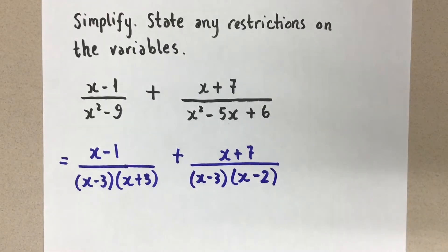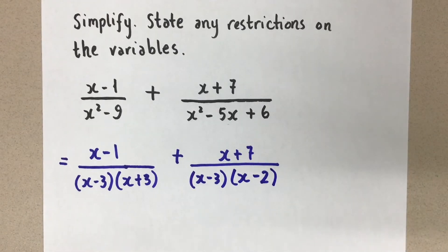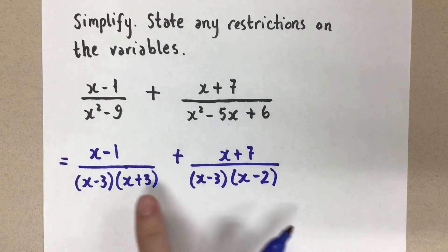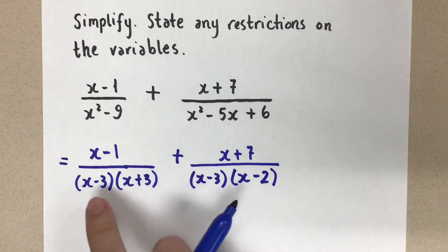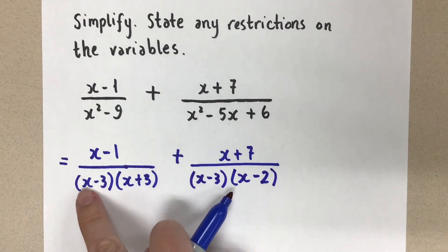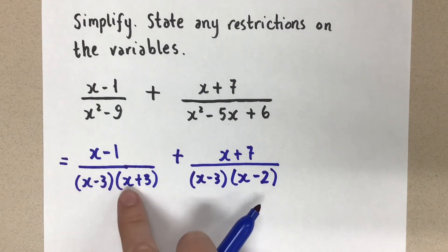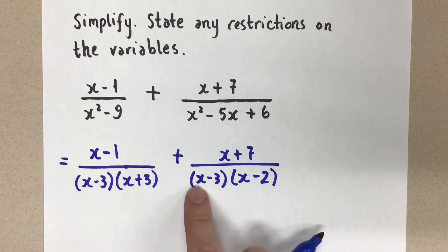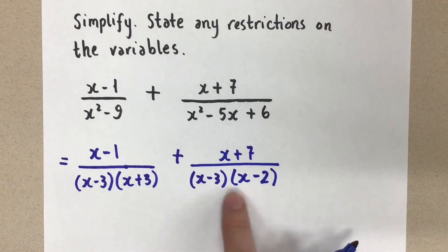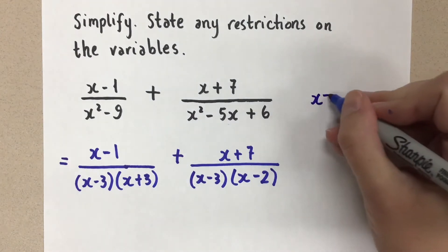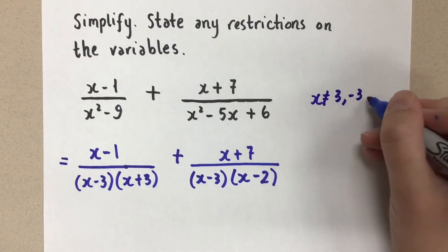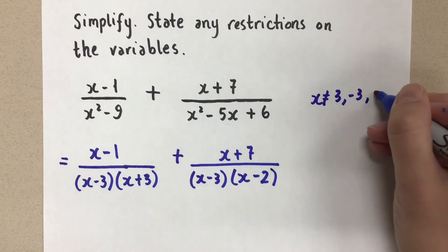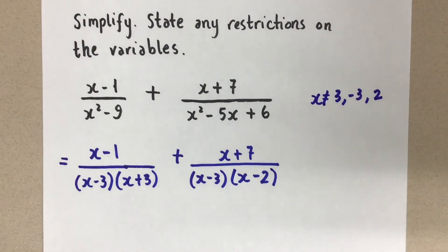So at this point, we can talk about our restrictions now before we forget. The restrictions are the values of x that make the denominator equal to zero. So we can't have x being three, or negative three. We've got three again, and then a positive two. So let's write those down. We will come back to these when we write our final answer, but we do not want to forget the restrictions. I like to write it down as soon as we factor so that we don't forget.